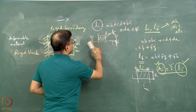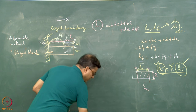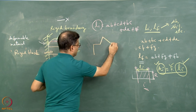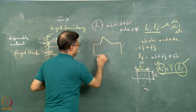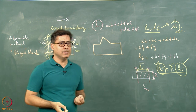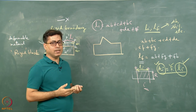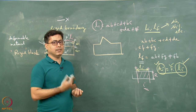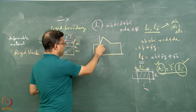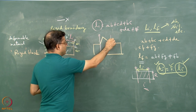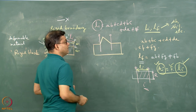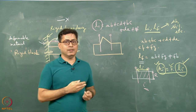As a continuation, if I take another fold geometry like this, we can call this the geometry of a kink fold because it has straight limbs and sharp hinges. Then again, line length balance can be done or area balance can be done, and the strain parameters can be obtained. For the line length balance method, I can take the pin lines here, and for the area balance also, these two can be taken and similarly the work can be done.